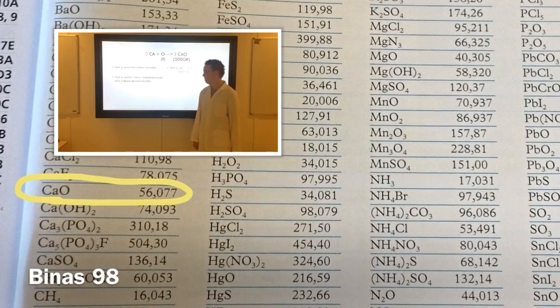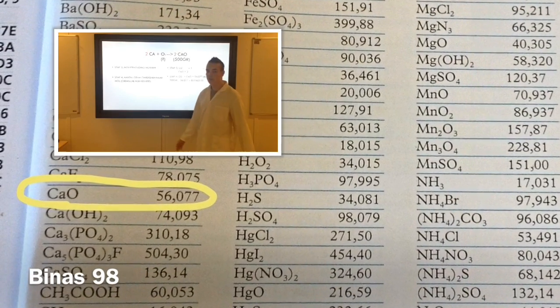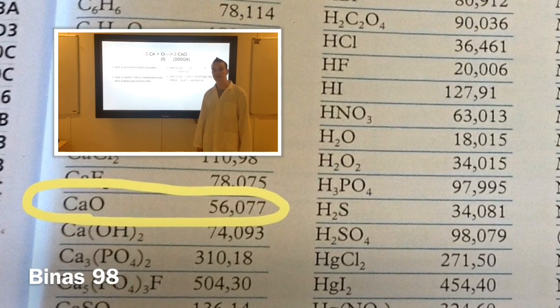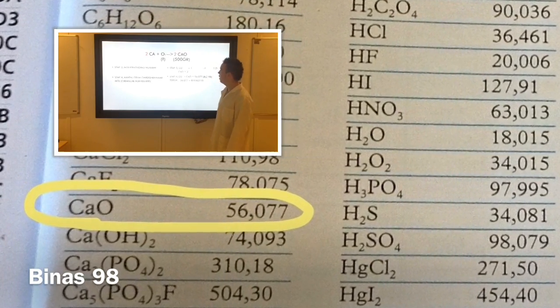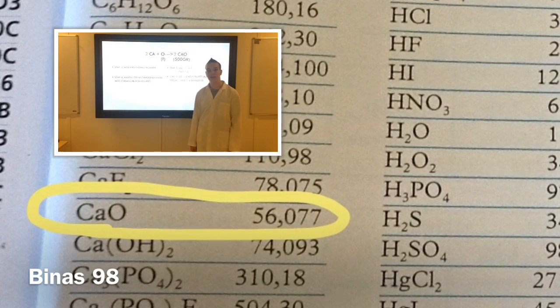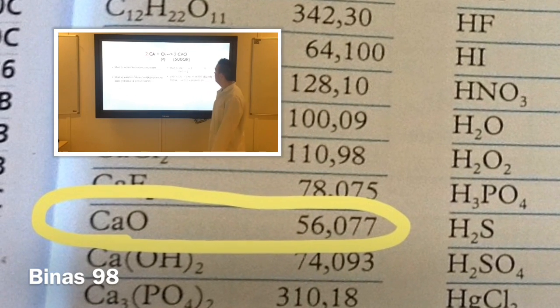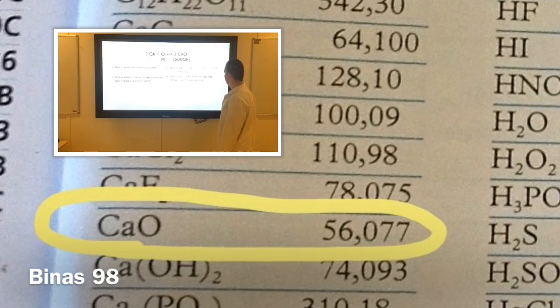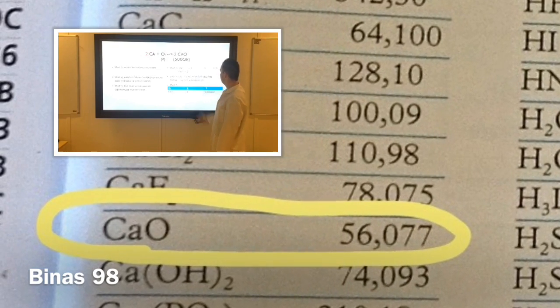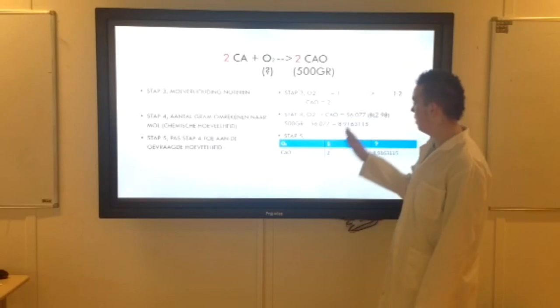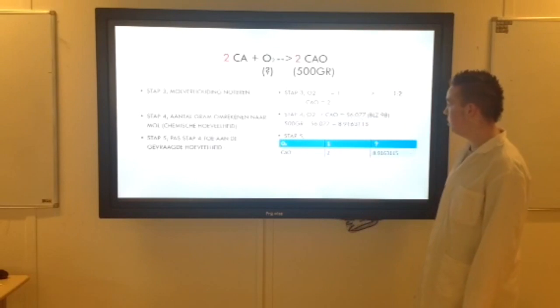Stap 4, dan gaan we omrekenen. Dat doen we via mol. En in de binas kan je dat mooi even zien. Want als je dan naar binas 99 gaat, dan kan je mooi alle eenzame stoffen even kijken. En als je naar binas 98 gaat, dan staan er de grote stoffen. Deze staat ook in je binas. Dat heb ik even opgezocht. Dat is 56,077. En dan gaan we die ook omrekenen. Dan deel je het door de molaire massa. We hebben 500 gram. Dat delen we dus door de molaire massa die we hebben opgezocht in je binas.